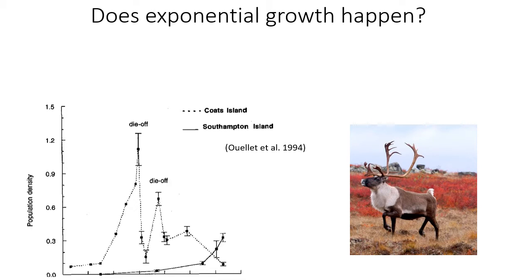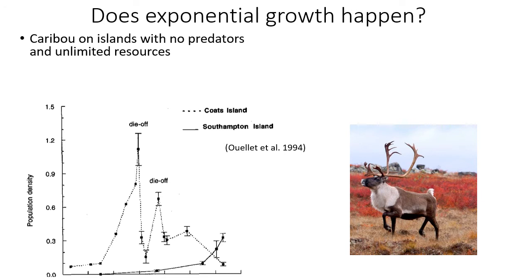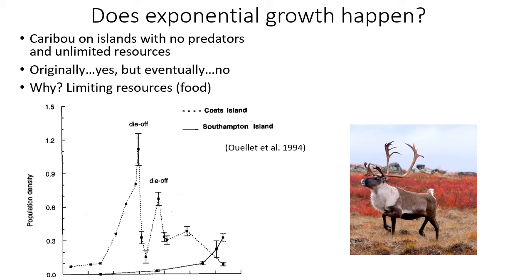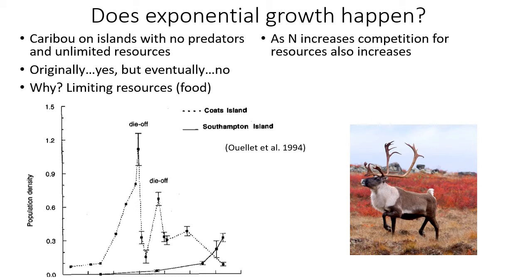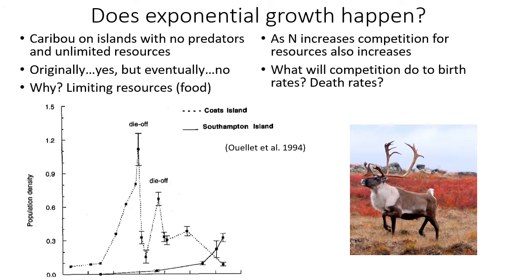Does exponential growth really happen? In the long run, unlimited resources exist nowhere. However, experiments have modeled it — for example, caribou placed on islands with no predators and unlimited resources reproduced rapidly, showing a J-shaped curve. But eventually they ran out of food, eating everything on the island. With no predators, diseases and other density-dependent factors became important for controlling growth, leading to a dramatic die-off. They overshot quite a bit of the number that would be sustainable on the island.